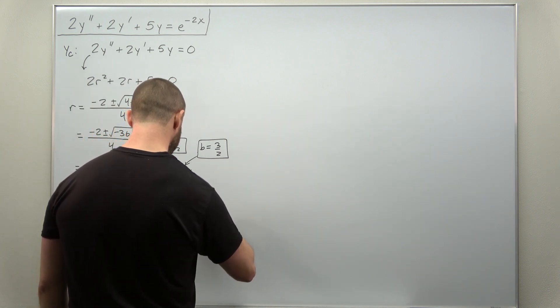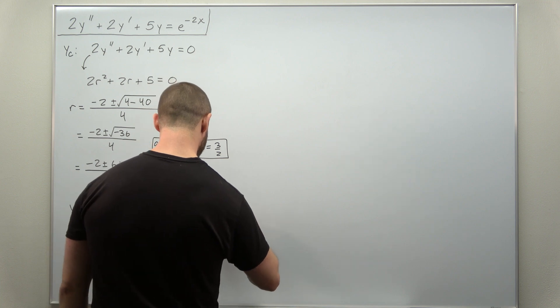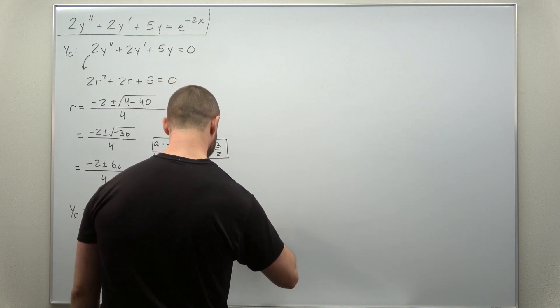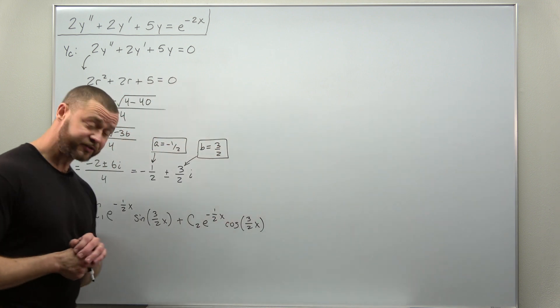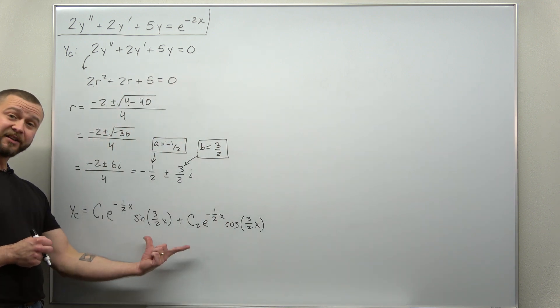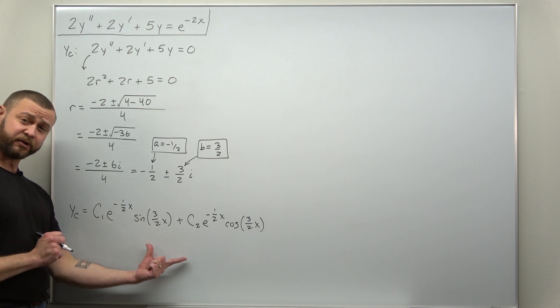And then we add to that a similar term in the complementary solution, but with sine replaced with cosine. So c2 e to negative 1 half x times cosine of 3 halves x. And that does it for our complementary solution.